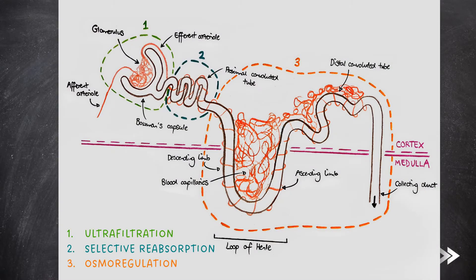Here we have a diagram so you can see where all of the steps occur. We have the blood capillaries, which at the glomerulus is known as the glomerular capillary. Note that the end of the glomerular capillaries that enters the glomerulus is known as the afferent arterial, and the end that leaves the glomerulus is known as the efferent arterial. The first stage, ultrafiltration, takes place at the glomerulus and Bowman's capsule. Then we have selective reabsorption, which occurs at the proximal convoluted tubule. And finally, osmoregulation occurs at the loop of Henle, distal convoluted tubule and collecting duct.